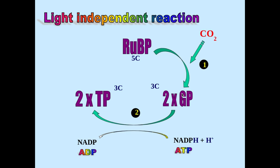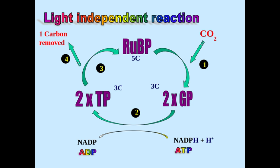After GP has been phosphorylated and reduced to make TP — a three-carbon compound — we have two lots of TP, giving six carbons in total. What happens is one carbon is removed to make some kind of product. That product could be something like glucose, starch, or cellulose. It could also make up a non-carbohydrate-based source such as a lipid or an amino acid. With that one carbon removed, five carbons remain and RuBP is regenerated.